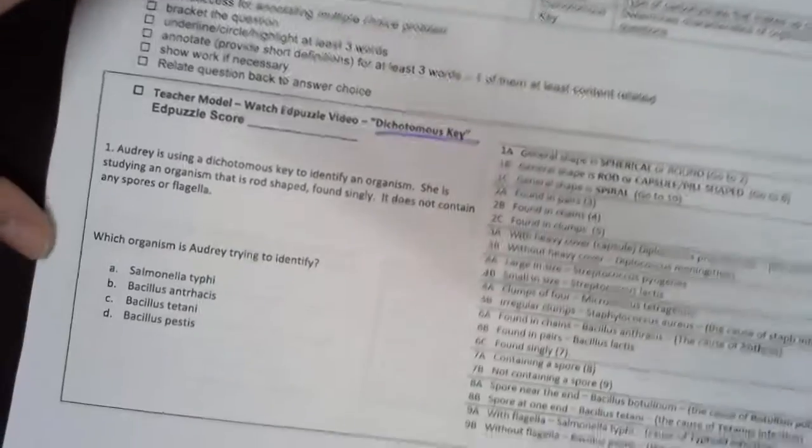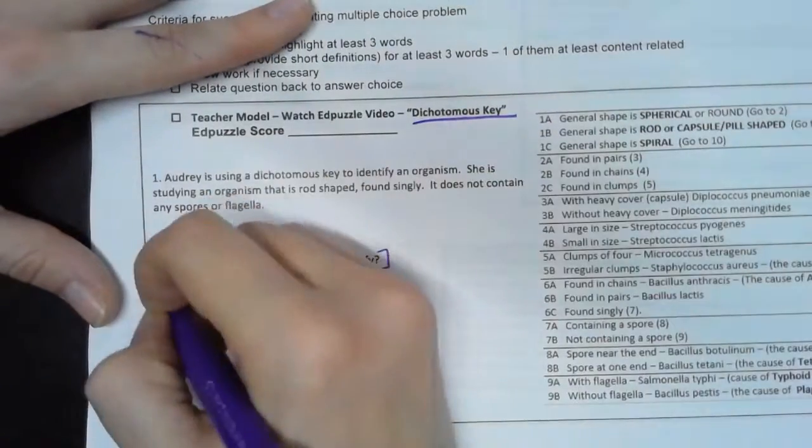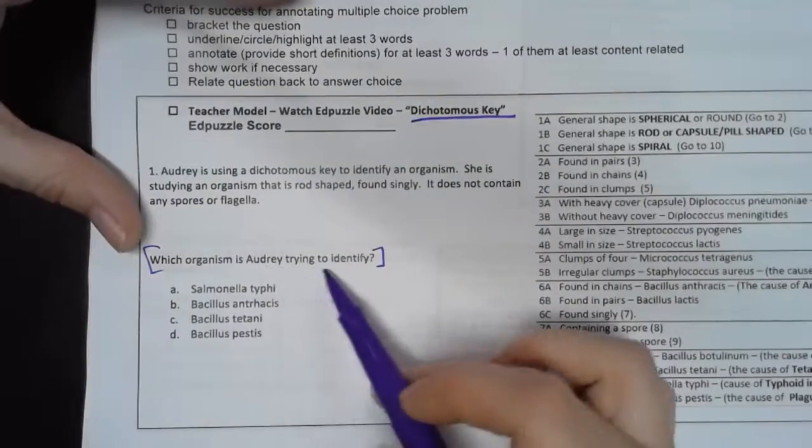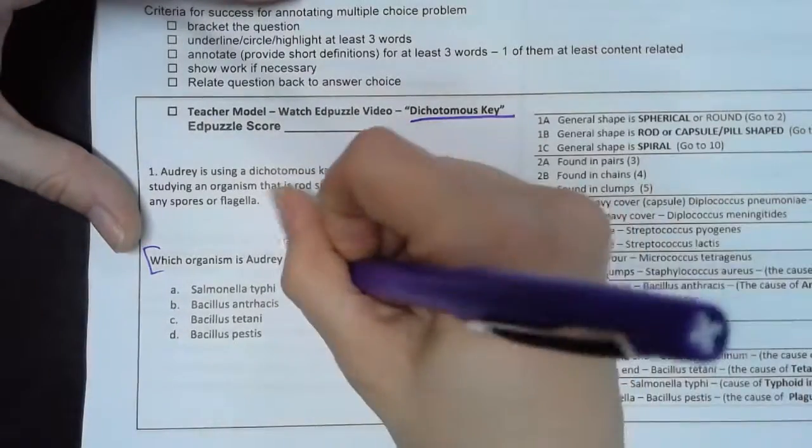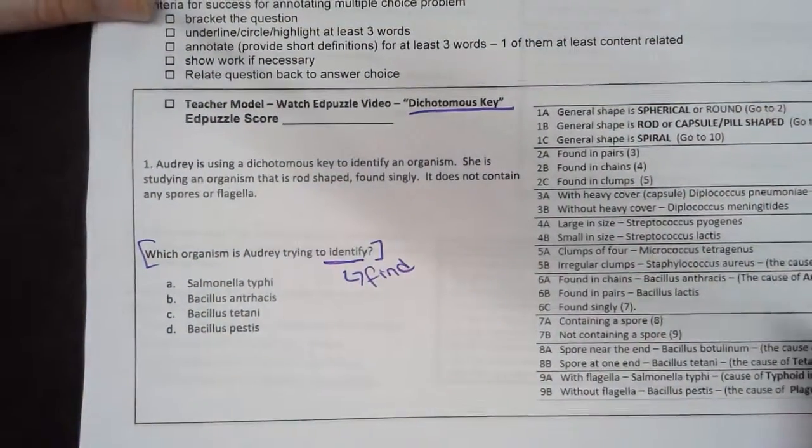I'm just going to show you how I expect you to annotate these types of problems. All right, let's bracket this: which organism is Audrey trying to identify? Identify is like, how do I find this? Okay, I have no idea because I need to go back and read the problem.